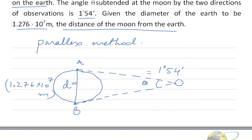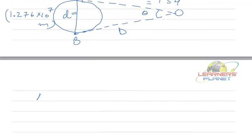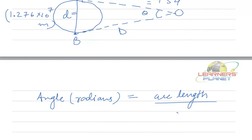Now this angle theta, this distance has to be measured. Let us say this distance is capital D. We know that angle subtended in radians is given by arc length upon radius.